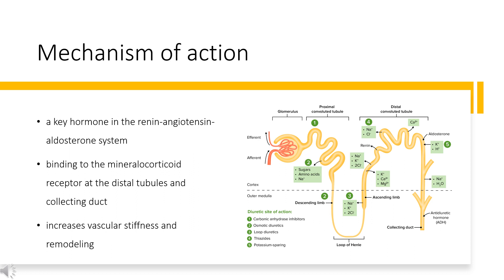Mechanism of Action: Aldosterone is a key hormone in the renin-angiotensin-aldosterone system. By binding to the mineralocorticoid receptor at the distal tubules and collecting duct, it causes sodium reabsorption and potassium secretion, increases vascular stiffness and remodeling, and activates pro-inflammatory pathways. Spironolactone and its active metabolites are aldosterone antagonists that competitively bind to receptors at the aldosterone-dependent sodium-potassium exchange site in the distal convoluted renal tubule, causing increased sodium and water excretion while potassium is retained. It acts both as a diuretic and antihypertensive drug, and may be given alone or with other diuretics acting more proximally in the renal tubule.